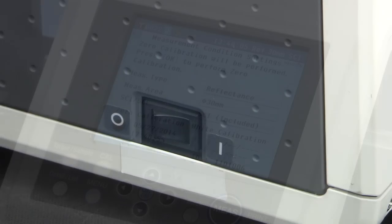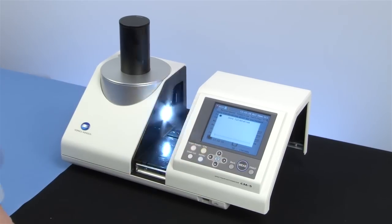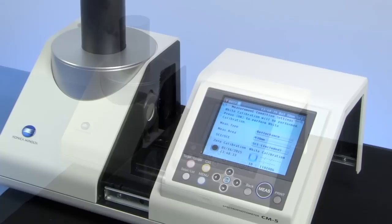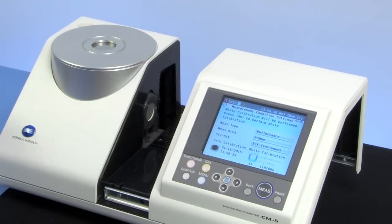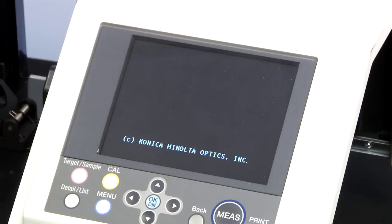To begin, just switch the instrument on, perform zero calibration, and then white calibration before each color measurement session. There is also an option to perform white calibration automatically.